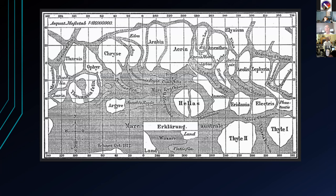His early Mars map shows mostly the southern hemisphere. Some features he named — like Elysium, Hellas, and Arcadia — are still recognized as formal geographic regions on Mars today.